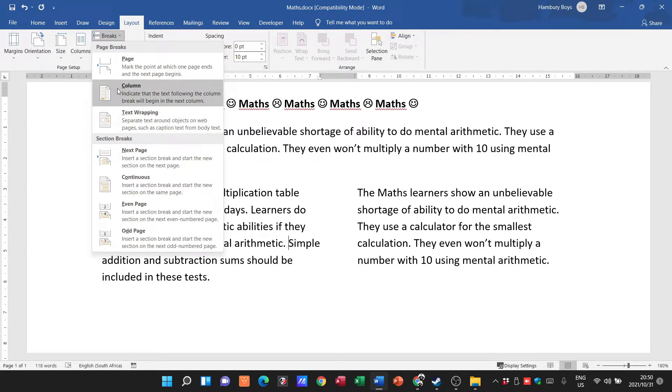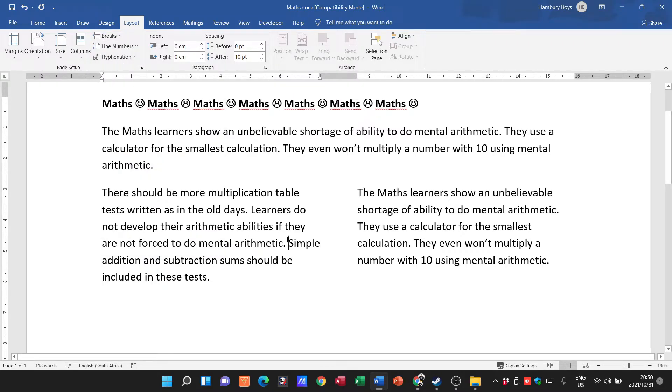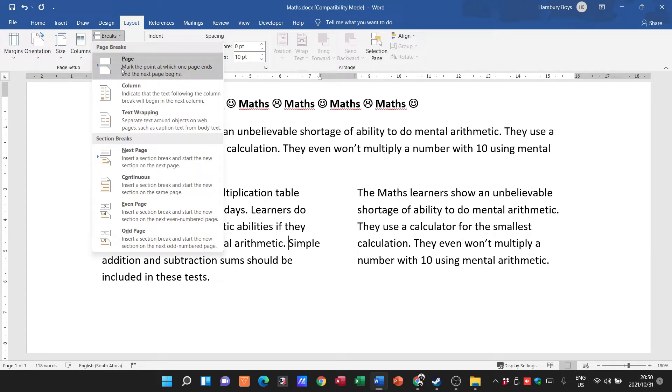'Indicate that the text following the column break will begin in the next column.' So I'm clicking here because whatever follows this cursor is going to start at the top of the next column. I go to Layout, Breaks, Column,